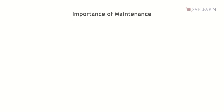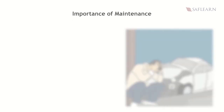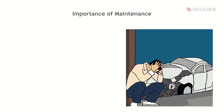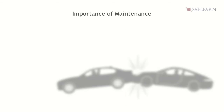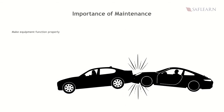But why do machines and equipment need to be maintained? Predictive and preventive maintenance helps save cost and time. Maintenance helps to increase the lifespan of machines and equipment. Maintenance also helps to make equipment function properly, avoid preventable breakdowns, and reduce chances of accidents.